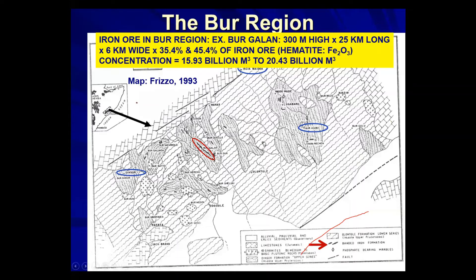And that is just from Borgalan. If we add all the other occurrences and outcrops present in the area, the total is much greater. Furthermore, the 300-meter height is only what is visible at the surface — we don't know how deep it goes, so there could be billions and billions more cubic meters of iron. There are also two other outcrops and additional banded iron formation zones marked on the map, making it quite a rich zone in terms of iron content.